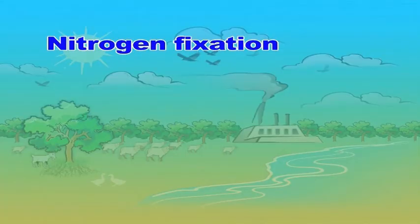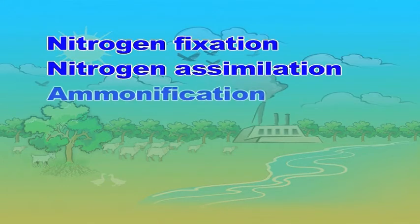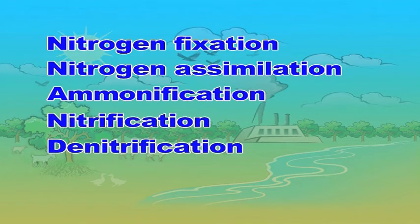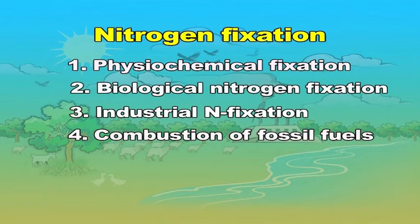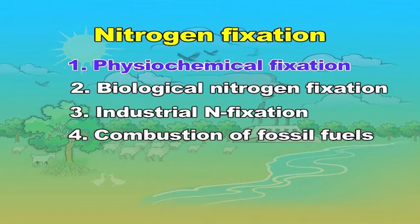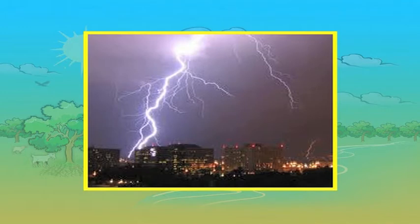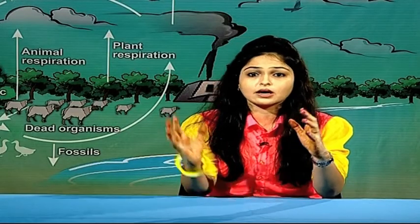The nitrogen cycle consists of various steps such as nitrogen fixation, nitrogen assimilation, ammonification, nitrification, denitrification and sedimentation. Nitrogen fixation is the process by which free nitrogen of the atmosphere is converted into biologically available form of nitrogen. There are 4 ways for nitrogen fixation. Number 1 is physiochemical fixation. During lightning and at the time of electric discharge in clouds, the nitrogen of the atmosphere combines with oxygen and produces different kinds of nitrogen oxides. These oxides of nitrogen get dissolved in water to form nitrates and other nitrogenous compounds.